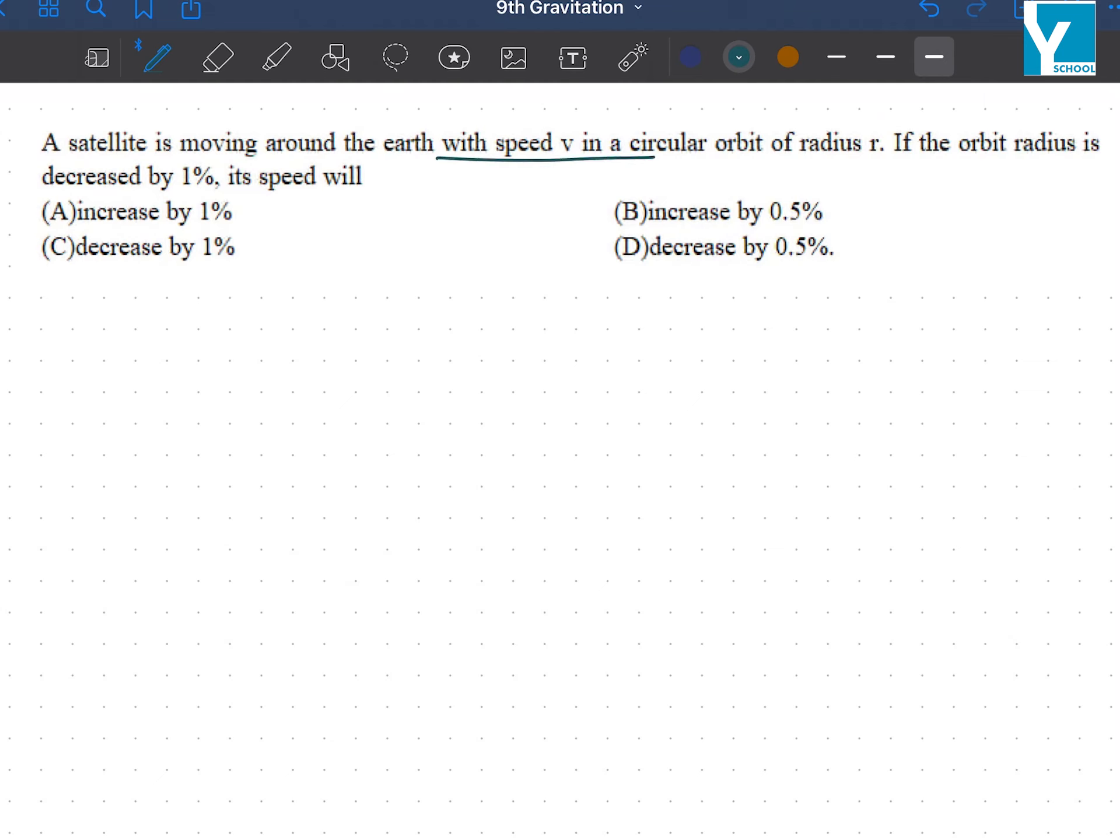A satellite is moving around the earth with speed v in a circular orbit of radius r. If the orbit radius is decreased by 1%, its speed will?